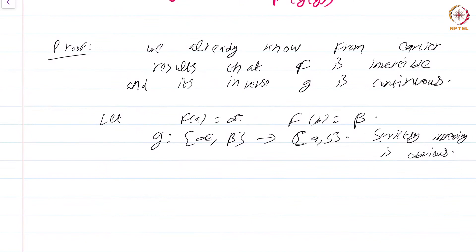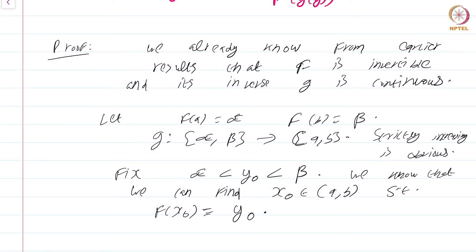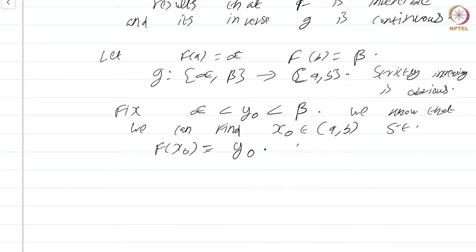Now we have to show that g is differentiable. Fix alpha < y₀ < beta. We have to show differentiability at this point. Because f is a bijective function — it is certainly injective and surjective — we know that we can find x₀ in the open interval (a, b) such that f(x₀) = y₀. In fact, this point is unique because the function f is strictly increasing since the derivative is greater than 0 everywhere.